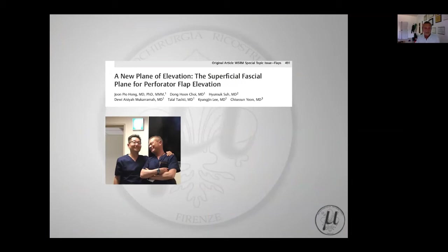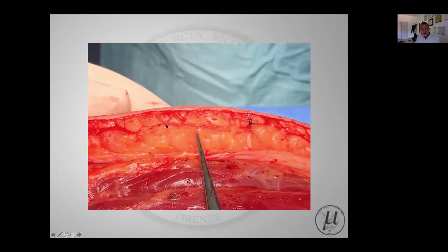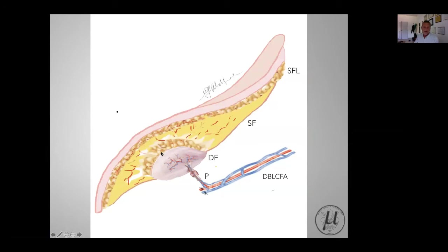JP Hong suggested a new plane of elevation of perforator flaps based on the superficial fascia plane. The superficial fascia is a virtual fascia - like the fascia Scarpa present in the abdomen - and it is present almost everywhere. You can easily distinguish the superficial fat from the deep fat because they are definitely different.